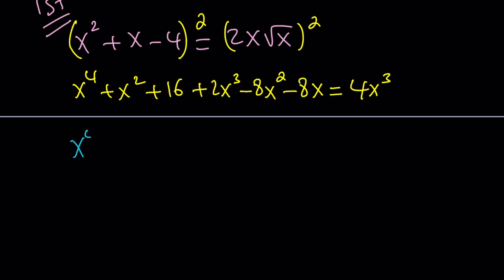So let's go ahead and combine like terms. We get x to the 4th. And then 2x cubed minus 4x cubed is going to give me negative 2x cubed. We have x squared minus 8x squared, which is minus 7x squared. And then we have the minus 8x, and then finally, plus 16 equals 0. Awesome.